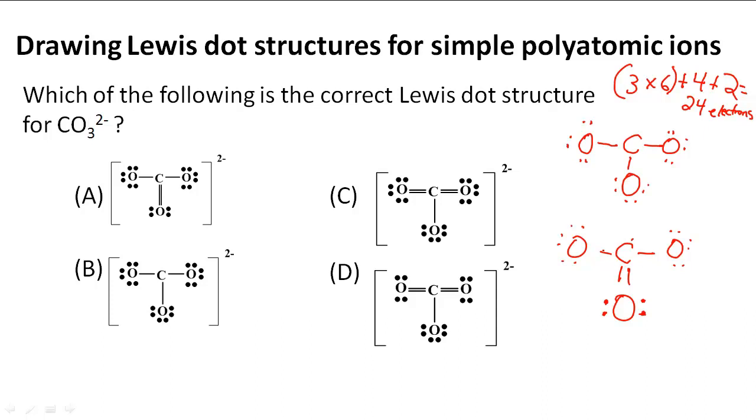And notice now, this has one, two, three, four, five, six, seven, eight. So now it's sharing eight valence electrons, and that's exactly what it wants to complete its octet rule.